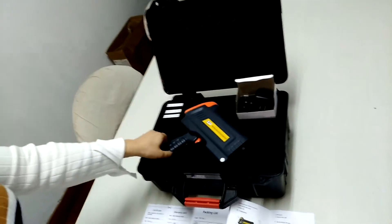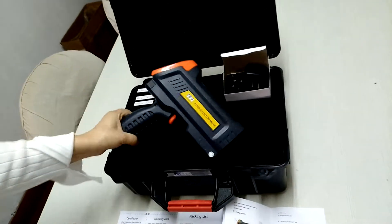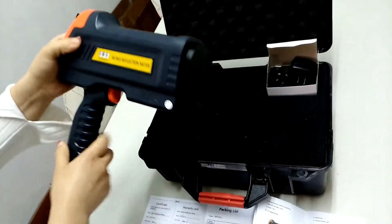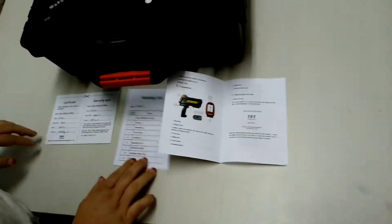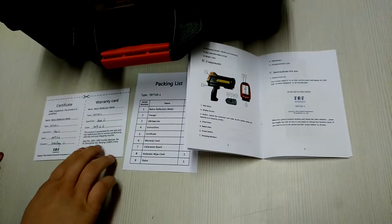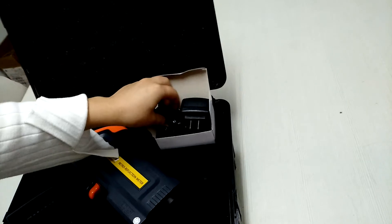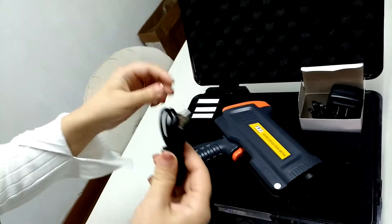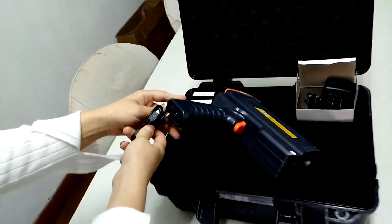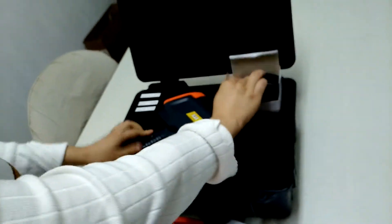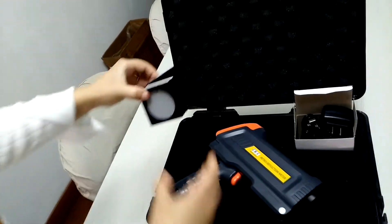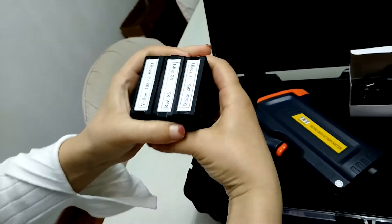This is our retroflection meter for absorbed sign. This one is the main unit and this one is the English manual, packing list, the certificate card. This is the charger and this is a USB connector to connect with PC. This is a calibration board, we have six colors.